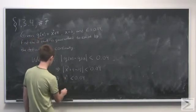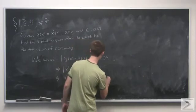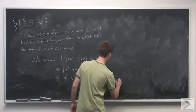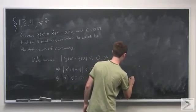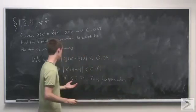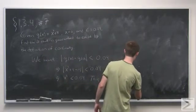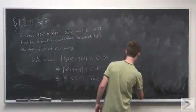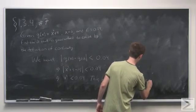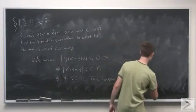Well, this happens precisely when x is in the following interval. Well, x can be greater than negative square root of 0.04, or it could be less than positive square root of 0.04.